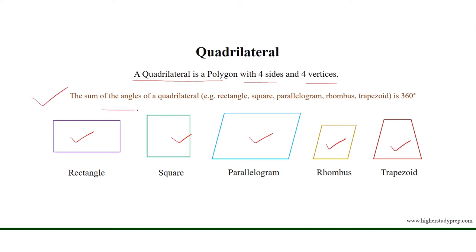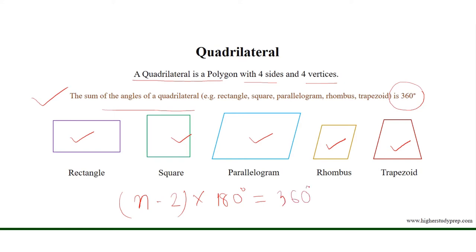The sum of the angles of a quadrilateral is equal to 360 degrees. Applying the formula (n - 2) × 180 degrees results in 360 degrees for a quadrilateral, where n equals 4, denoting the number of sides.